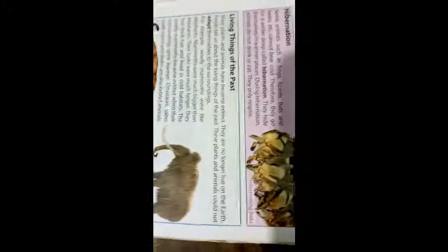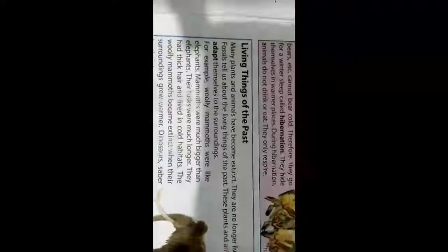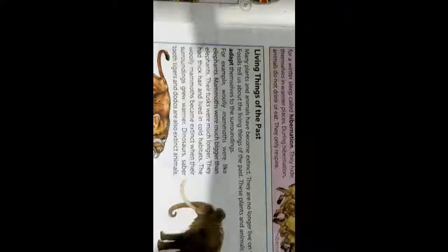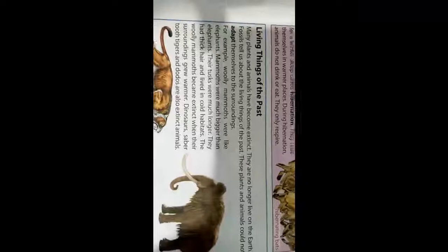Now come to the next topic — living things of the past. Many plants and animals have become extinct — they no longer live on the earth, like dinosaurs. These plants and animals could not adapt themselves to their surroundings, so they were lost.